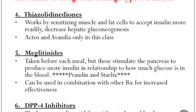The fourth class is thiazolidinediones. These work by sensitizing muscle and fat cells to accept insulin more readily, therefore decreasing hepatic gluconeogenesis. Examples of drugs in this class include Actos and Avandia.